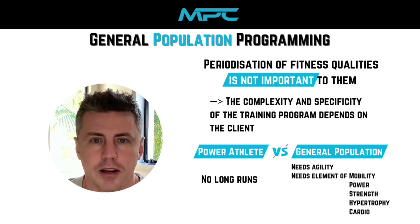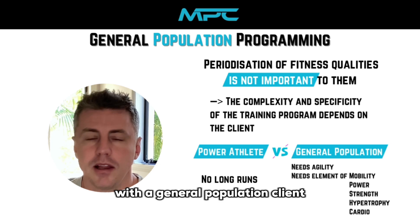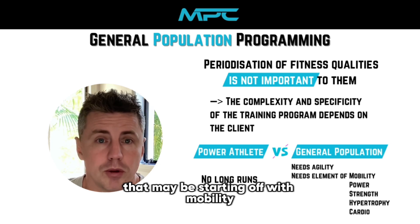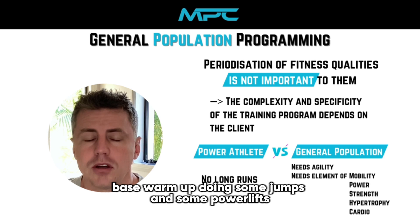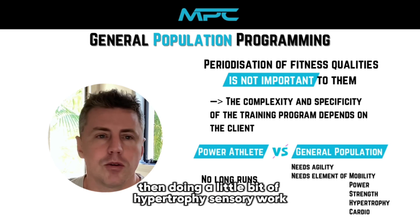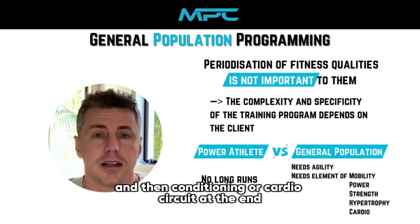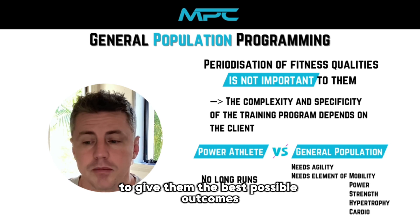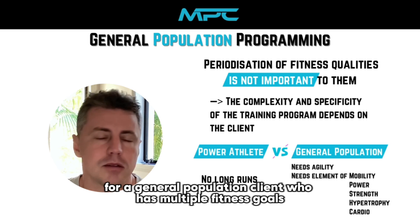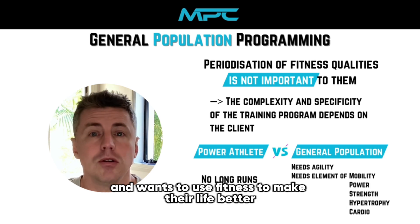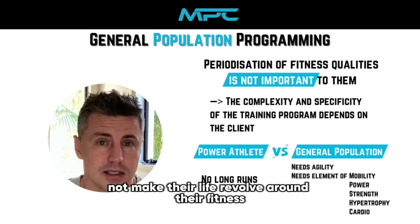So concurrent training programs are the best way to go with a general population client. That may be starting off with a mobility-based warmup, doing some jumps and some power lifts, doing some heavy strength training, then doing a little bit of hypertrophy accessory work, and then a conditioning or cardio circuit at the end. That is a great way to program for a general population client who wants to use fitness to make their life better, not make their life revolve around their fitness.